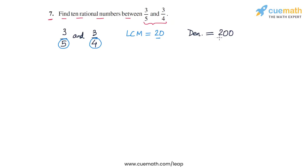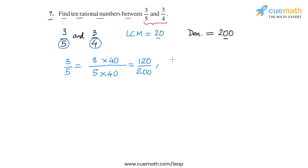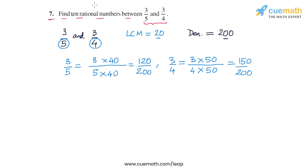We will write both 3/5 and 3/4 as equivalent rational numbers with the denominator 200. To convert 3/5, we multiply both numerator and denominator by 40, giving us 120/200. To convert 3/4, we multiply both by 50, giving us 150/200.